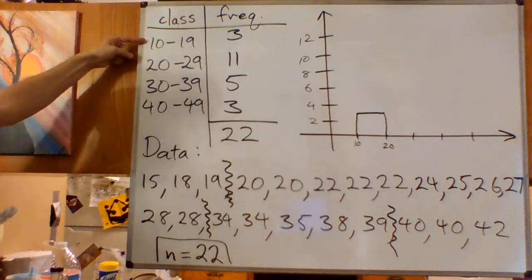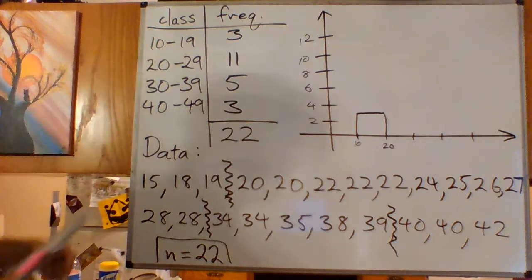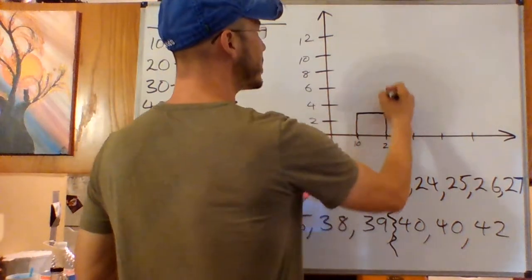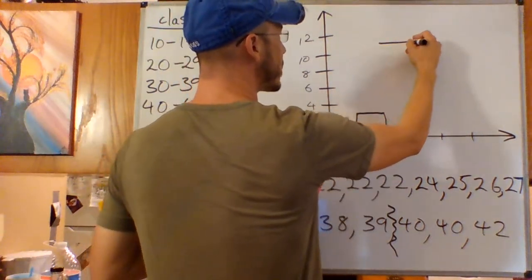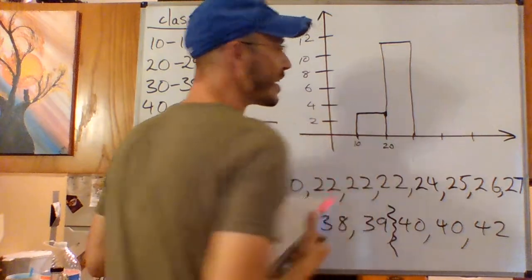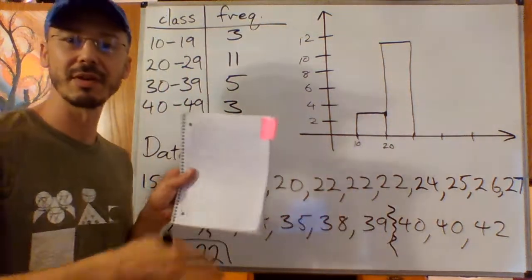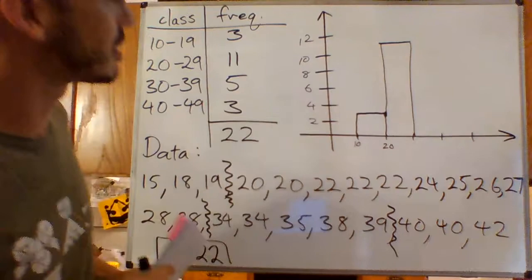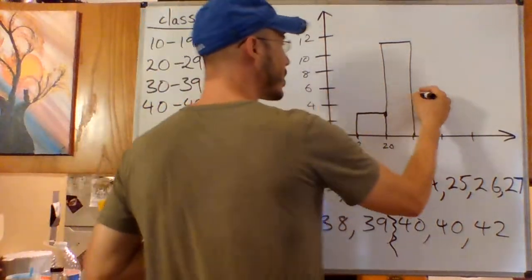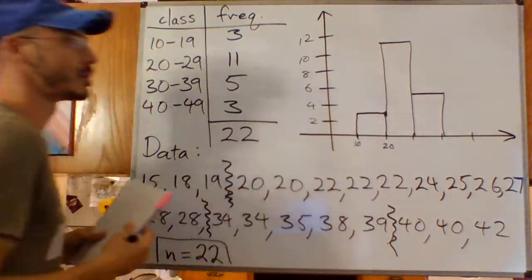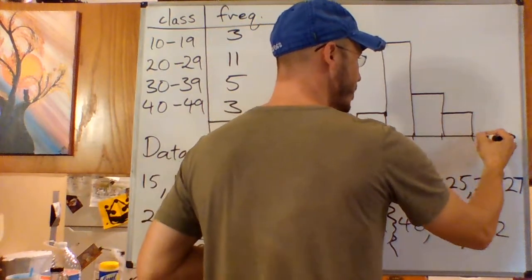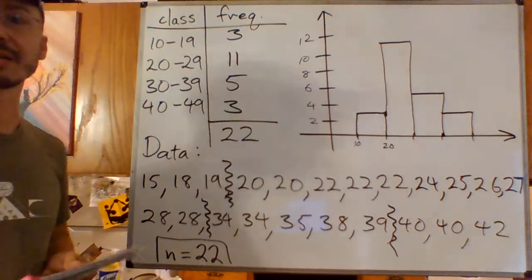The next one is going to be much taller. The next one's going to be up at 11. This is a little bit easier with lined paper. You just have to take your time. That's not too bad. So that one's 11 tall. The next one should be five tall. Frequency is five. And the next one should be three, which is the same height as the first one. So there's my histogram.